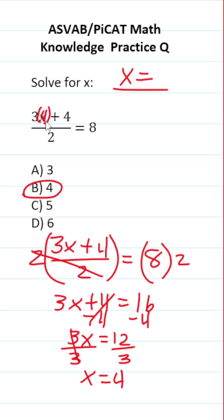go ahead and plug in 4 to the original equation and see if it makes a true statement. This becomes 3 times 4 plus 4. 3 times 4 is 12, plus 4 is going to be 16. So this says 16 over 2 equals 8. 16 divided by 2 is 8. Does 8 equal 8? That is a true statement.